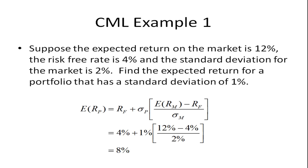Suppose the expected return on the market is 12% and the risk-free rate is 4%, and the standard deviation of the market is 2%. Let's find the expected return for a portfolio that has a standard deviation of 1%. Plugging into the equation: 4% + 1% × (12 − 4) / 2, and we get 8%.